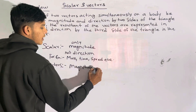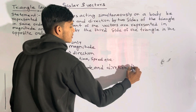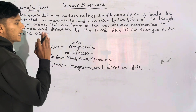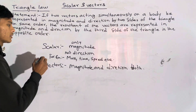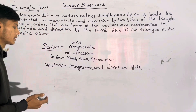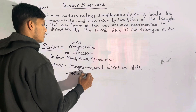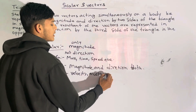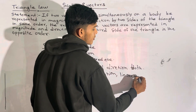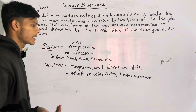Vector has both magnitude and direction. The physical quantity that has both magnitude and direction is the vector. Examples include velocity, linear, angular, and area.